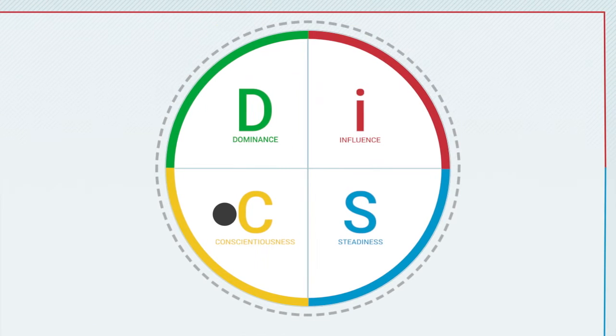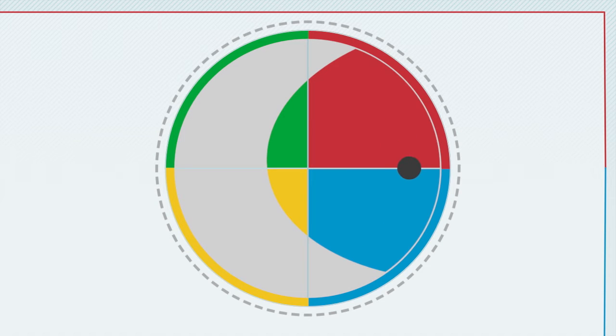Now, in the real world, it's not always that simple. Your dot can be between two styles, such as in the area between I and S. And you can have four or even five priorities.